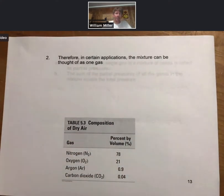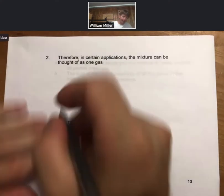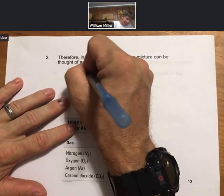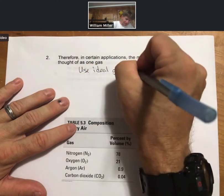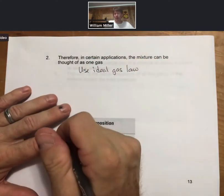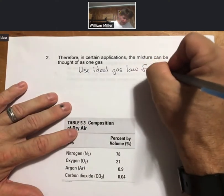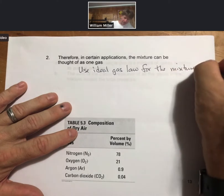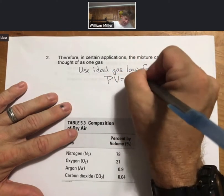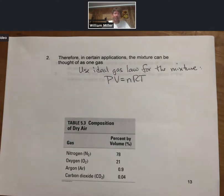Therefore, in certain applications, the mixture can be thought of as one gas. And we can use the ideal gas law for the mixture, PV equals nRT. And we don't make any differentiation between the fact that it is a mixture.